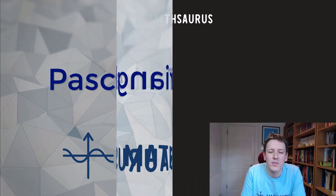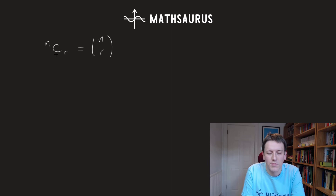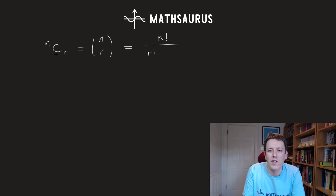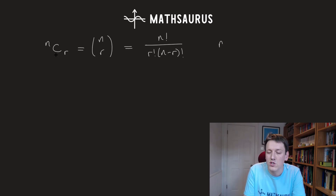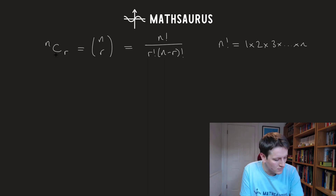You can compute the numbers in Pascal's Triangle using this formula: n choose r, sometimes also written as a column n r. This is n factorial over r factorial times n minus r factorial, where n factorial just means multiply all the numbers together: 1 times 2 times 3 and stop when we get to n. These give us the numbers in Pascal's Triangle.